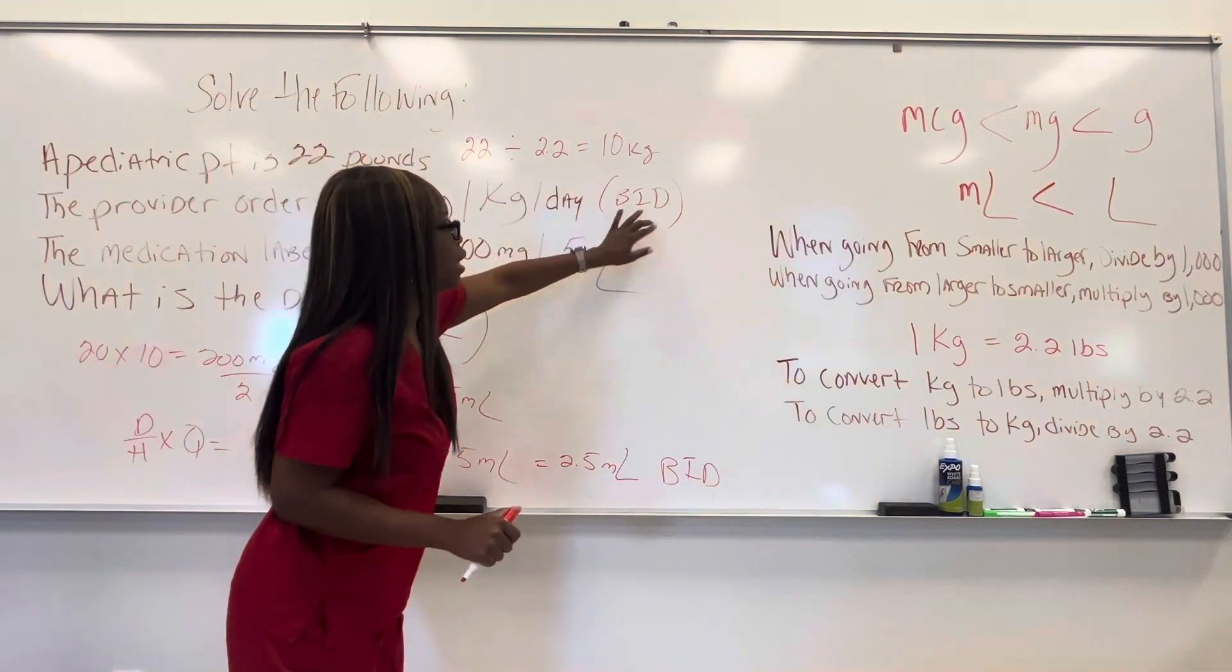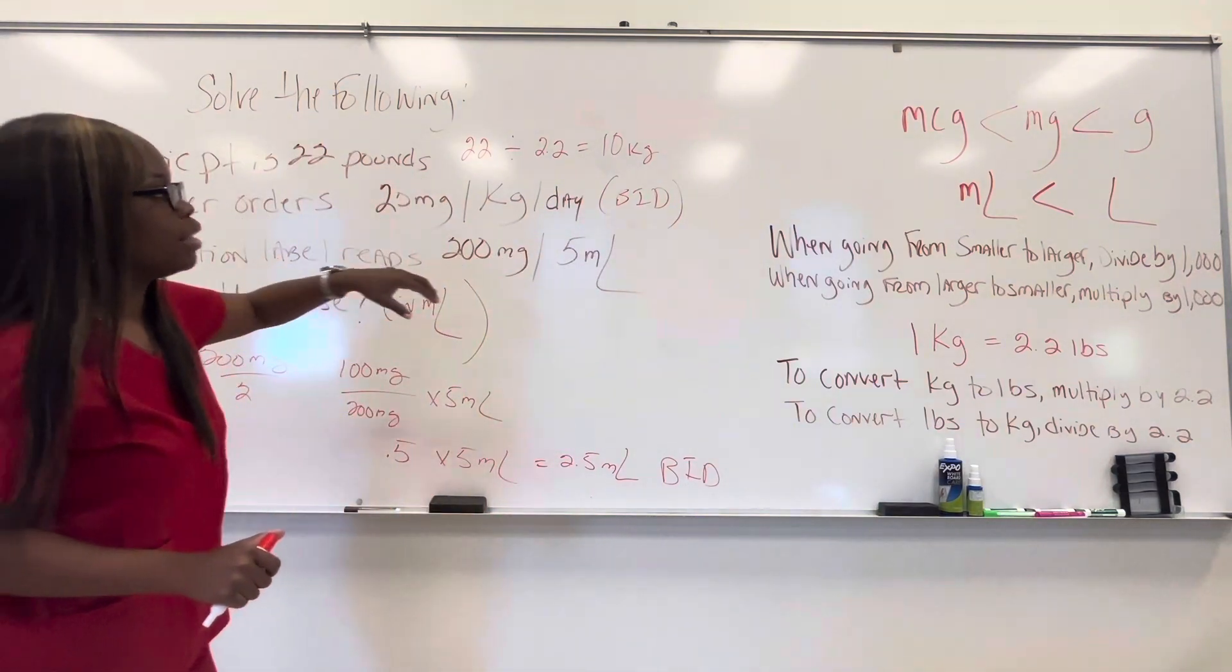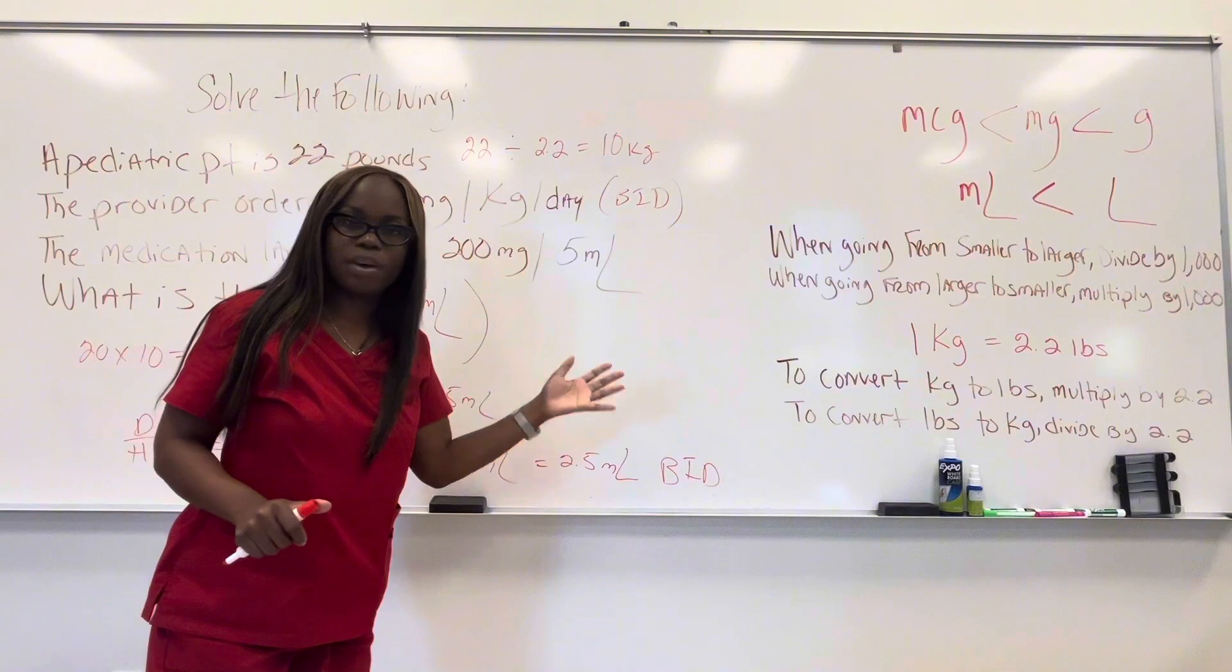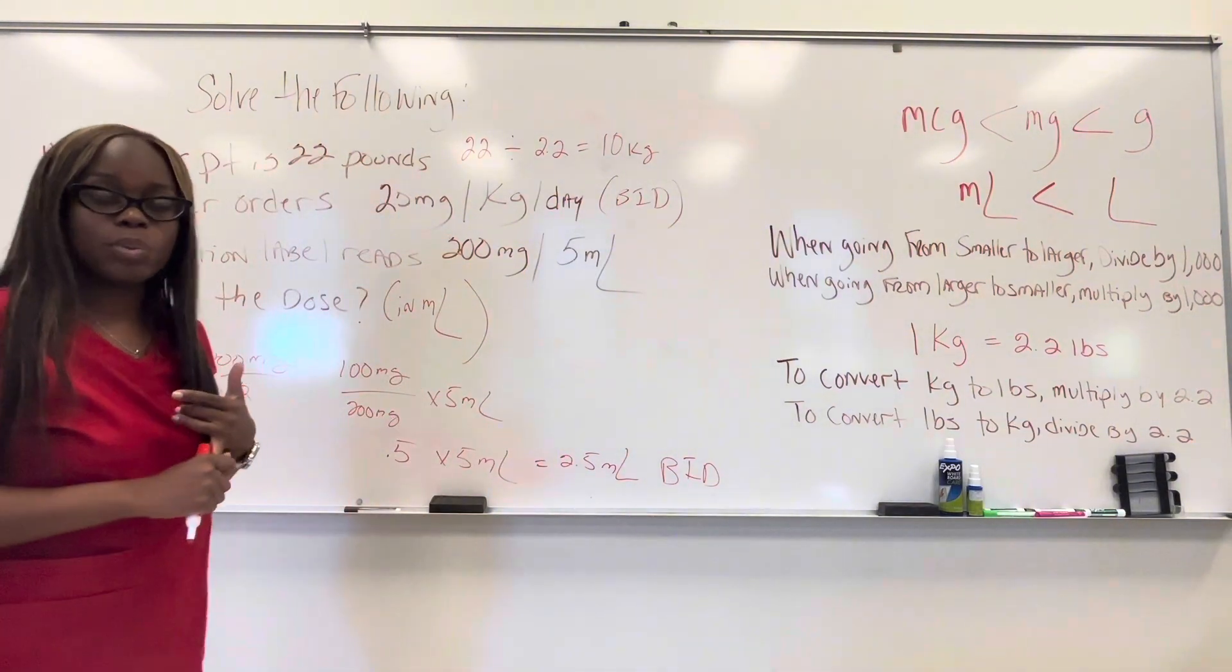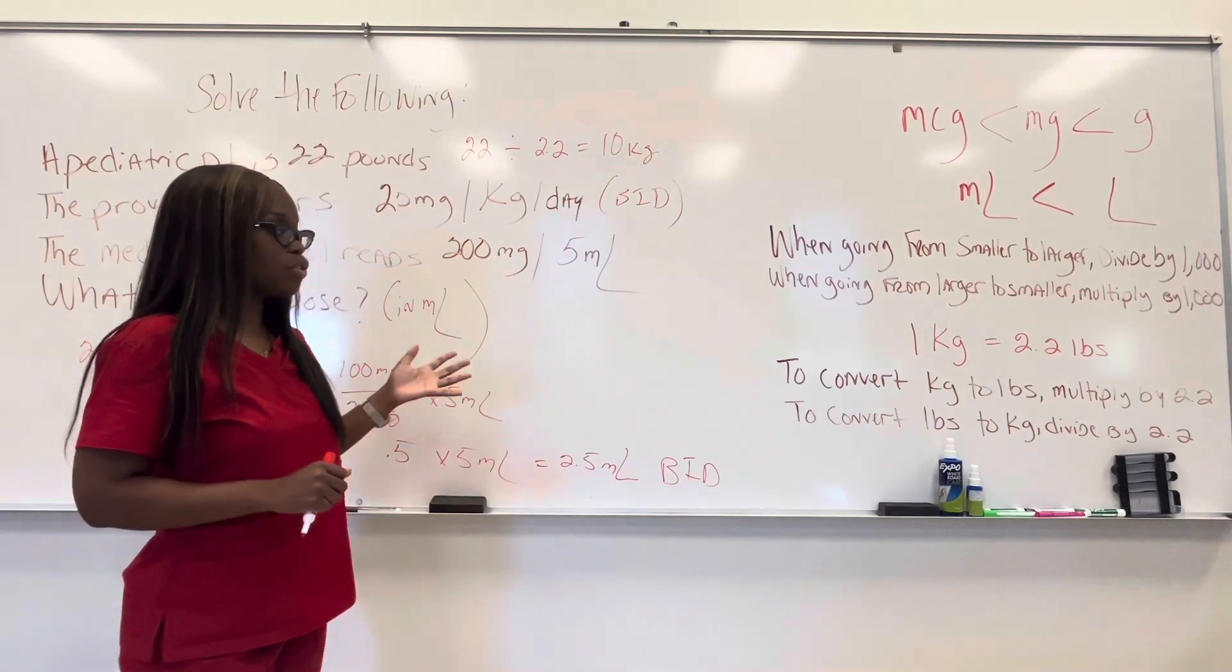If it says BID, they want it in two doses, right? TID, three doses, QID, four doses, right? So that's of course going to take you back to knowing your abbreviations when it comes to your prescriptions, right? And your orders.